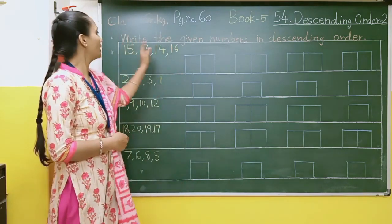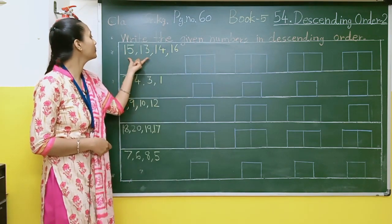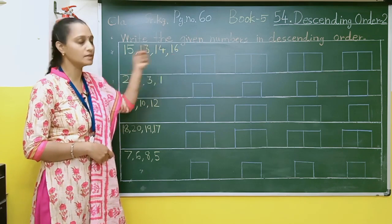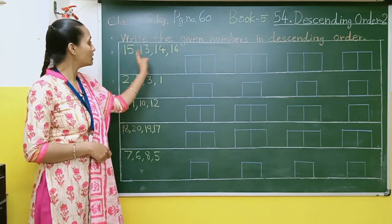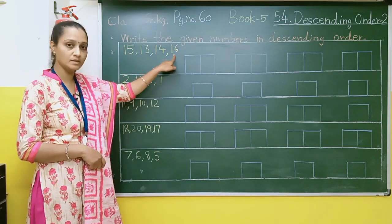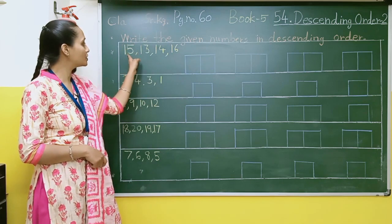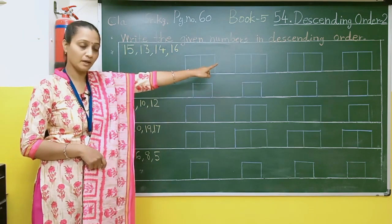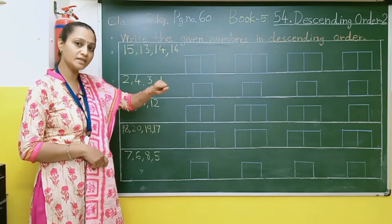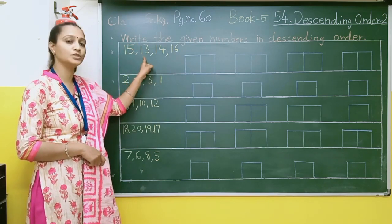So here, write the given numbers in the descending order. Here we have given numbers which are 15, 13, 14, and 16. Now the biggest number is 16. After 16 we have 15. And the next biggest number is 14, and then 13.